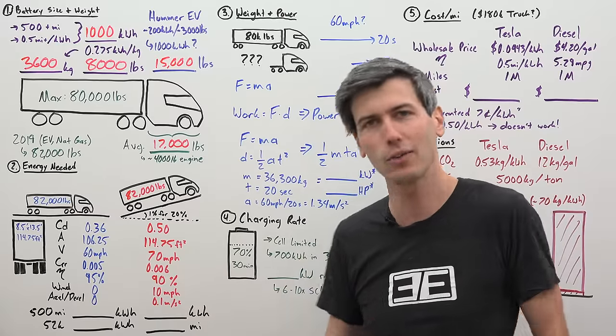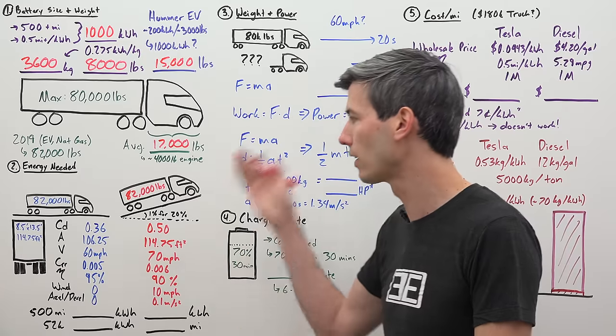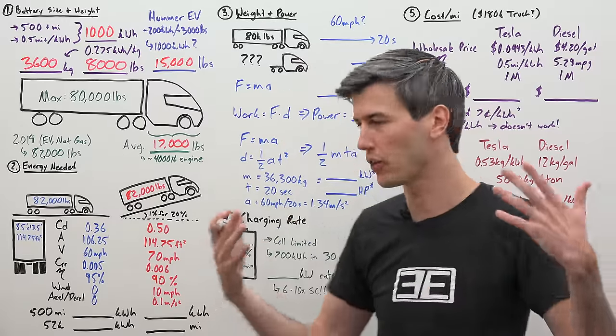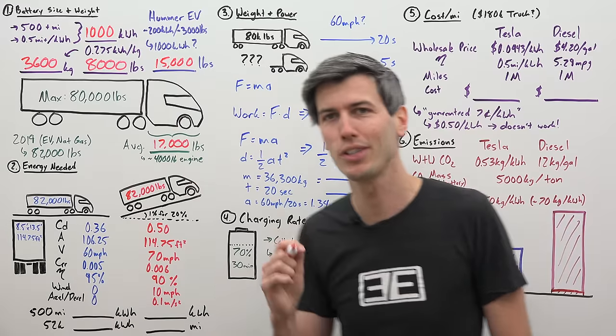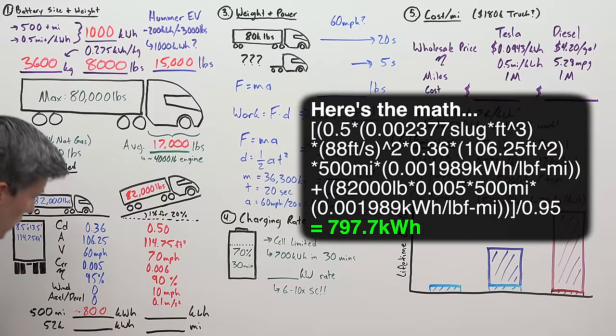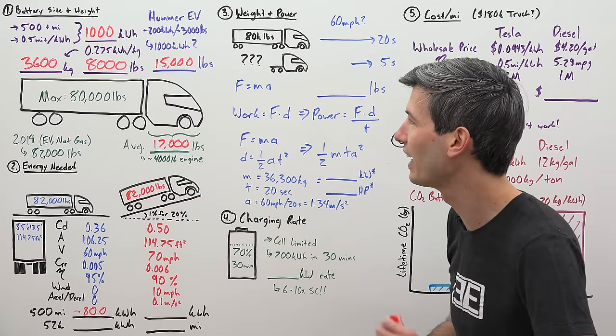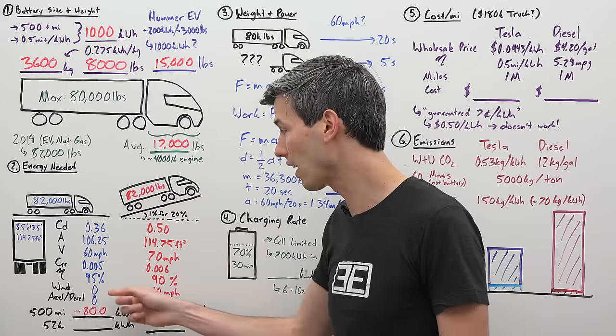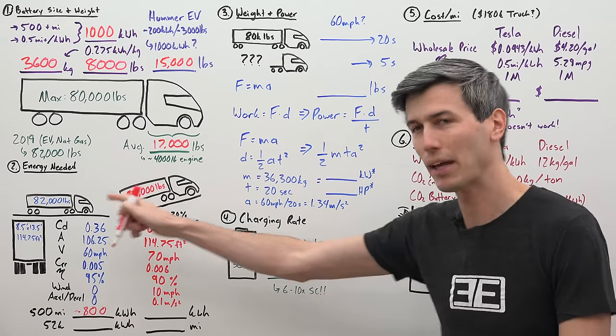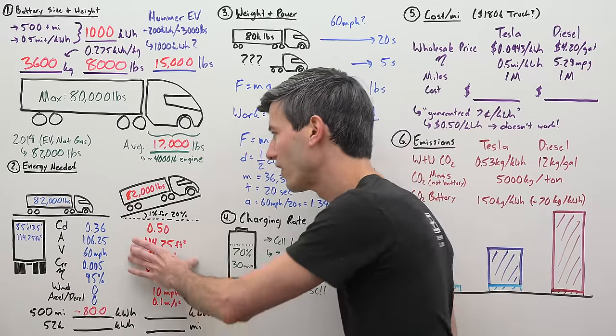We're going to say there's no wind and there's no time spent accelerating or decelerating, just a constant 60 miles per hour going down a perfectly flat road with no wind. How much energy would you need for 500 miles? You would need roughly 800 kilowatt hours. That is less than a thousand, so theoretically possible. If Tesla says the battery capacity is 800 kilowatt hours or less, I would be skeptical of it actually achieving that 500 mile range, because in the best case scenario that's basically the absolute minimum.